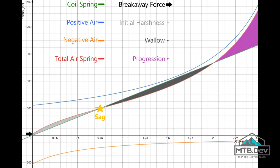In this example, progression is relatively high, but we can increase the positive air volume to reduce that. If the progression is too high, the shock manufacturer may elect to give a portion of the negative air volume to the positive air chamber. This will make the initial and mid-stroke less coil-like, but the shock won't ramp up unusably.